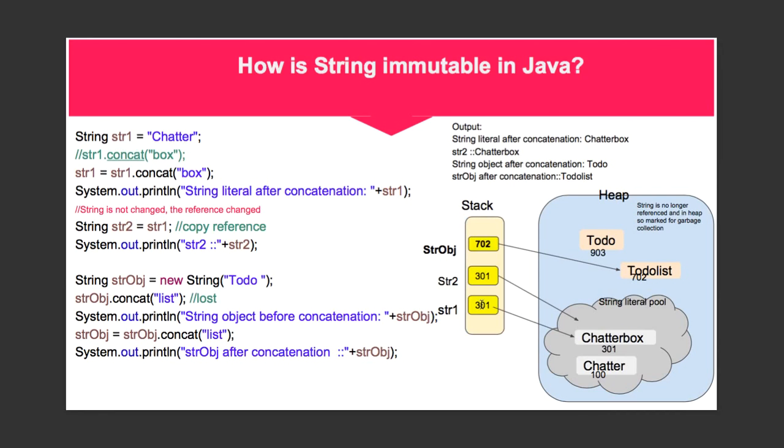Now if string was not immutable, changing the Chatterbox object through str1 can also affect str2. But we may not want that change to happen, and that's the reason why string is made immutable.